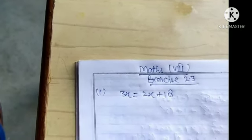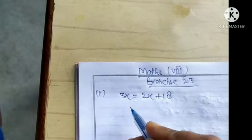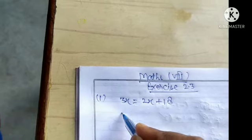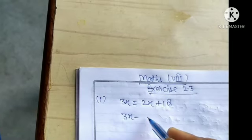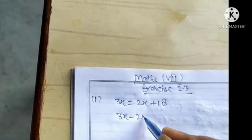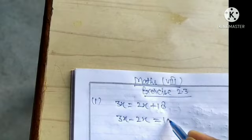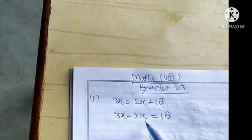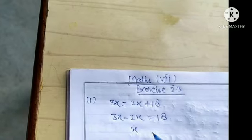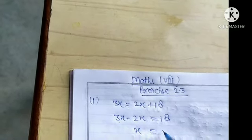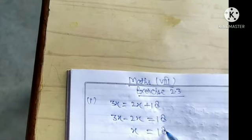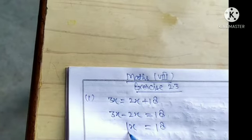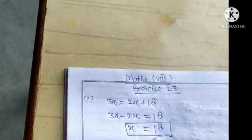Find out the value of x. Transpose 2x from RHS to LHS. You get 3x minus 2x is equal to 18. Then 3x minus 2x equals 1x, that is x is equal to 18. This is your solution of the given equation.